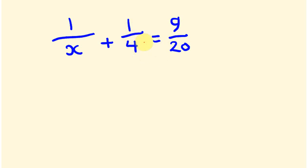So to do that, we multiply this 4 by 5. What we do to the top we have to do to the bottom, so we're also going to multiply this by 5. So we're going to end up with 1 over x, we're going to be adding that to 1 times 5 is 5, 4 times 5 is 20, and this is equal to 9 over 20.